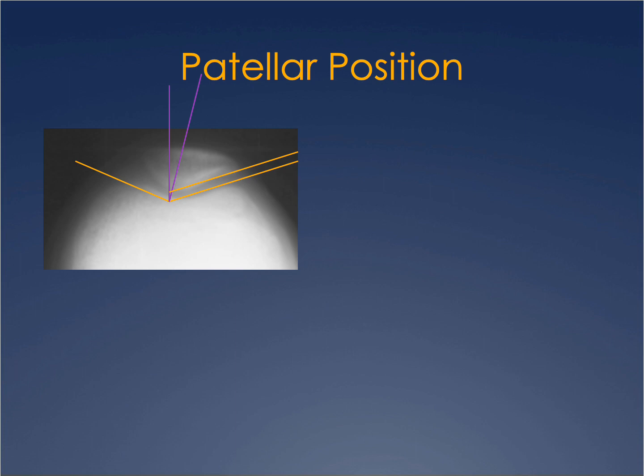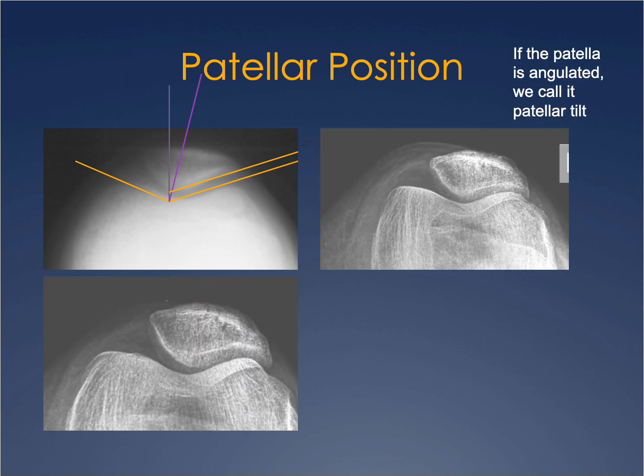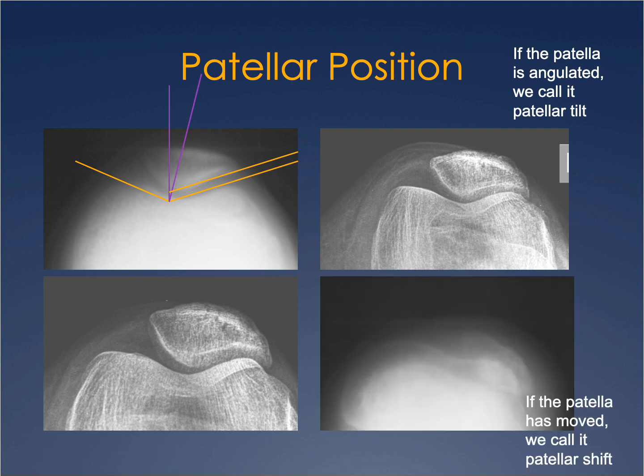Another aspect of patellar position is assessed on the skyline view, where you determine whether the patella is centrally located within the trochlear groove. If the patella is tilted — usually laterally downward — we call it a lateral patellar tilt. If the patella has actually moved laterally, we call it a patellar shift.